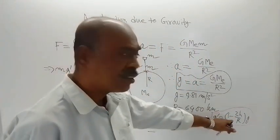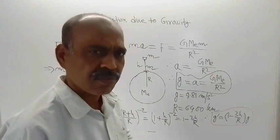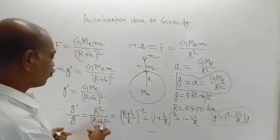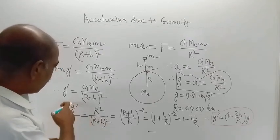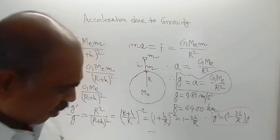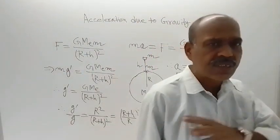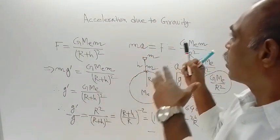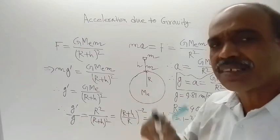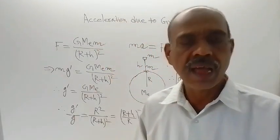We can write g' = g·(1 − 2h/r) only in the case where h/r is very much less than 1. Otherwise, you need to use the exact formula: g'/g = r² / (r+h)² — no approximation. This is the end of this video. In the next video, you will see that due to other reasons also, acceleration due to gravity may change, and that will be discussed. Thank you for watching this video. Have a wonderful day.